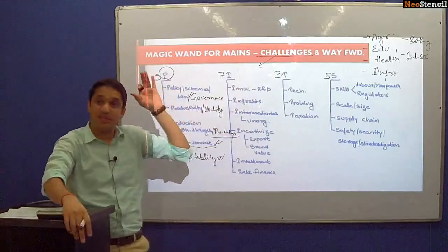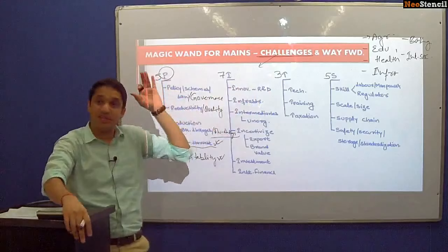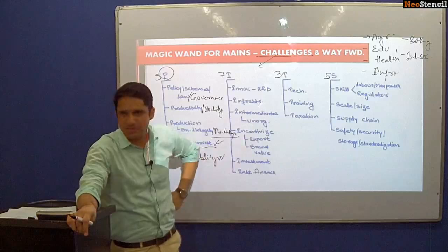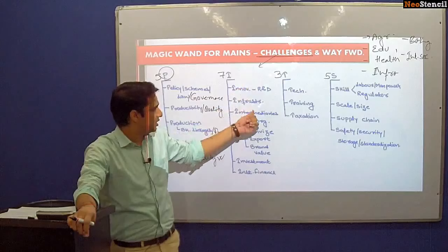Next we discuss the 7I in the agriculture sector. The first I is related to innovation and R&D — new quality of seeds is a major problem. The second I is infrastructure — infrastructure bottlenecks exist and capital formation in agriculture is not happening. The third dimension is related to intermediaries, specifically for the unorganized sector.